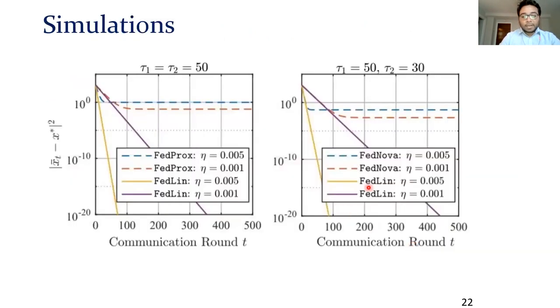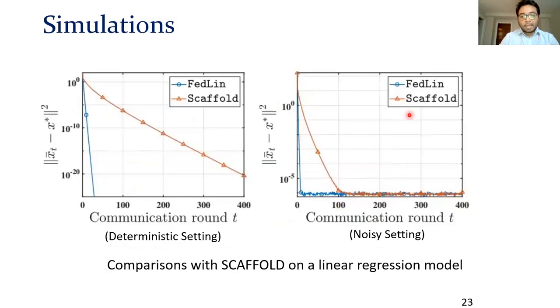Now let's take a quick look at some simulations. Compared to FedProx and FedNova, we get linear convergence, whereas these algorithms hit an error floor. And compared with Scaffold, we consistently get faster convergence rates, both for the deterministic setting and for the noisy setting. We conjecture this is because of the fixed point property that FedLIN has, but Scaffold does not.